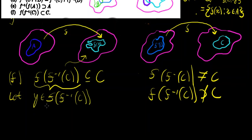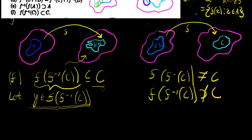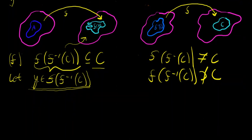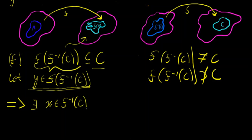If we can prove that any element y with this property must also be in C, then we prove that all elements in the image of the inverse image of C must also be in C. Every element in the image of the inverse image of C has this property, so every such element must also be in C — like every item in a purse has the property of being in a purse. So let y be in the image of the inverse image of C. Then that implies there exists an x in the inverse image of C such that f(x) = y.